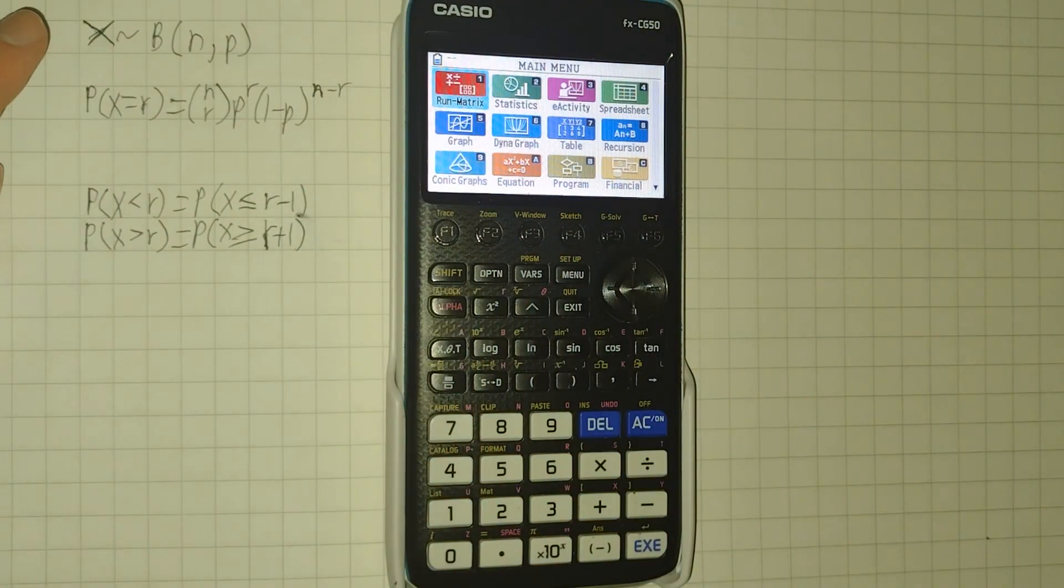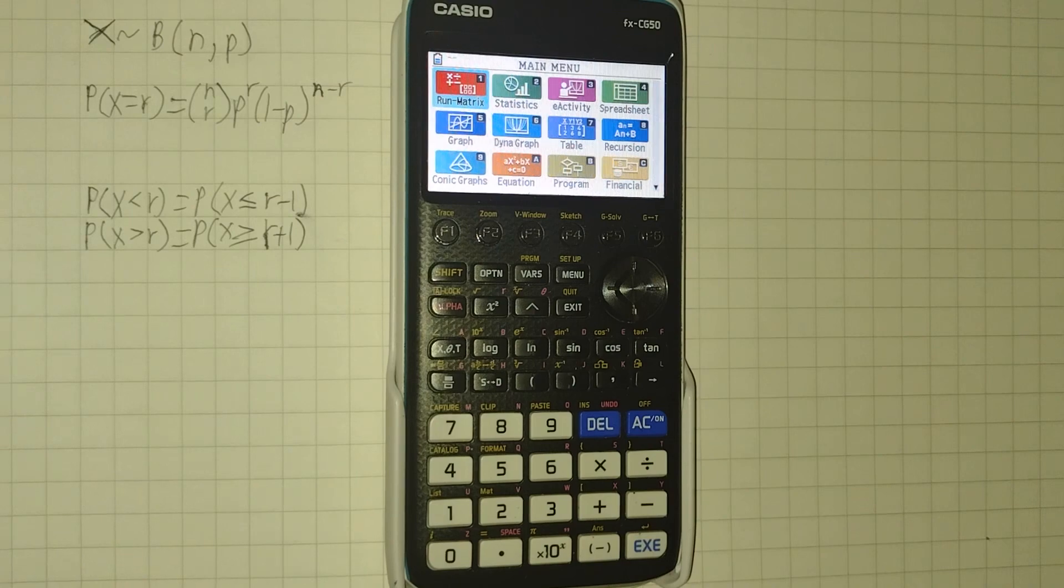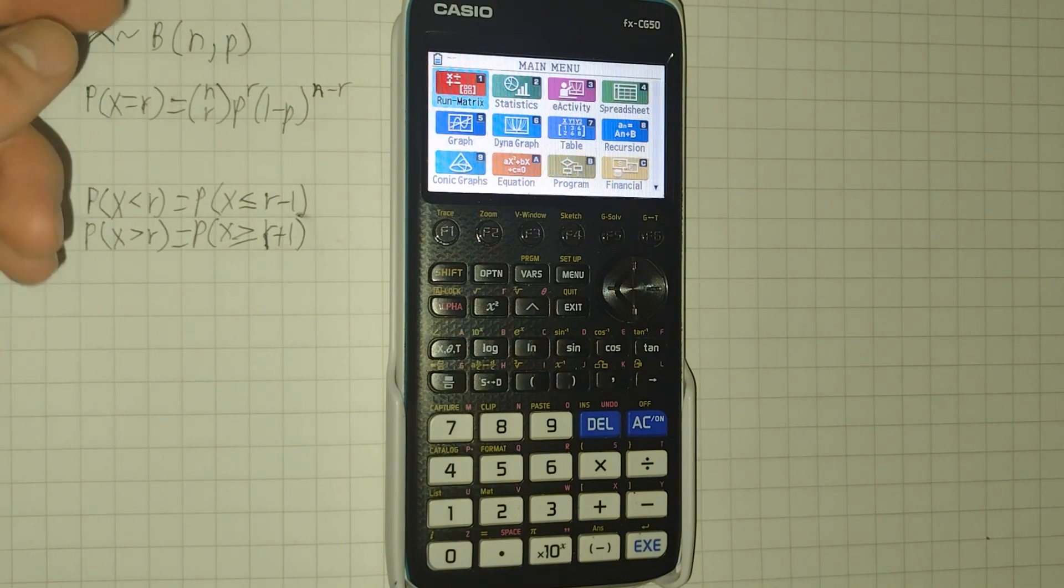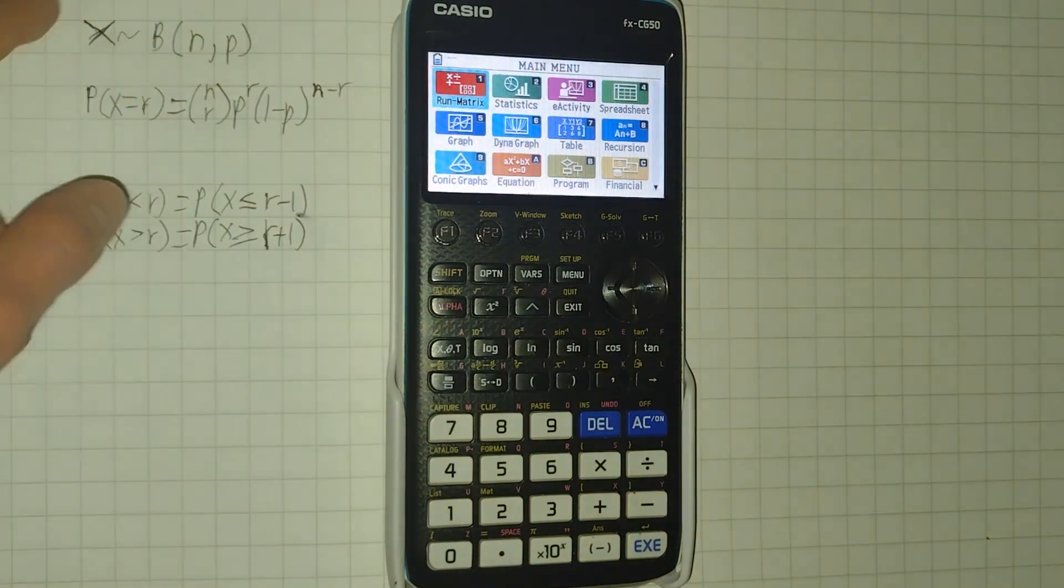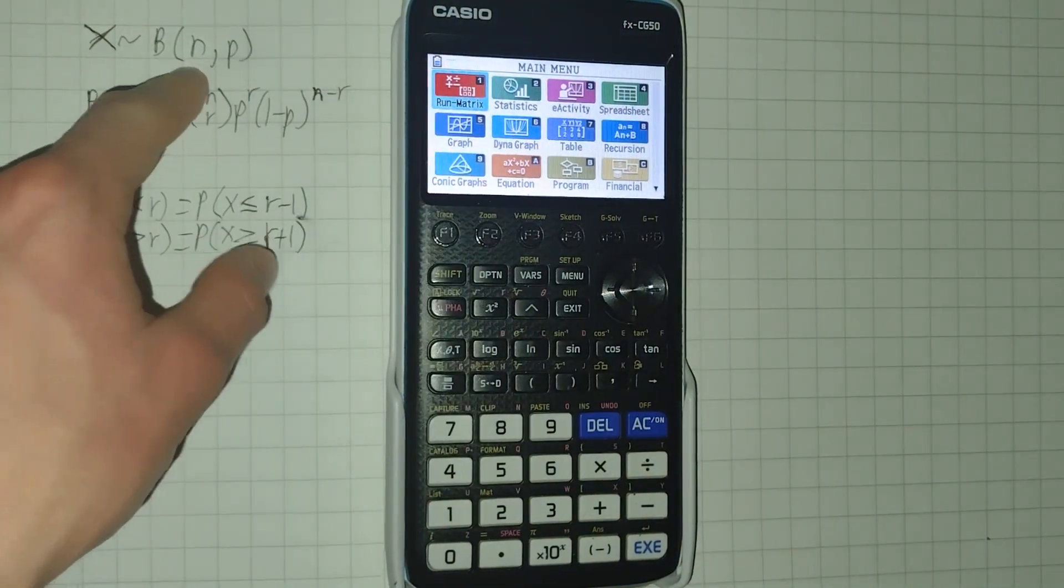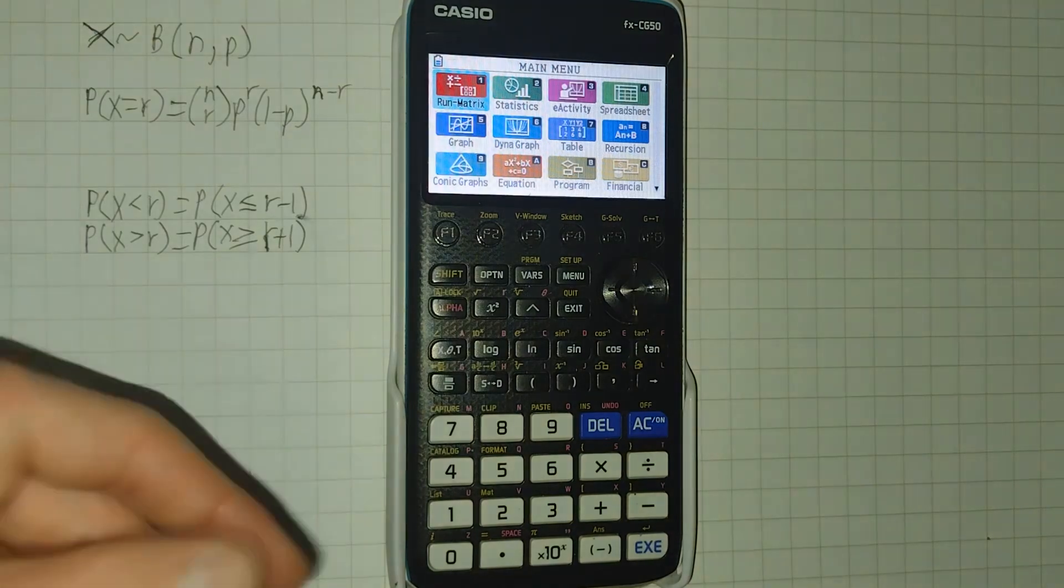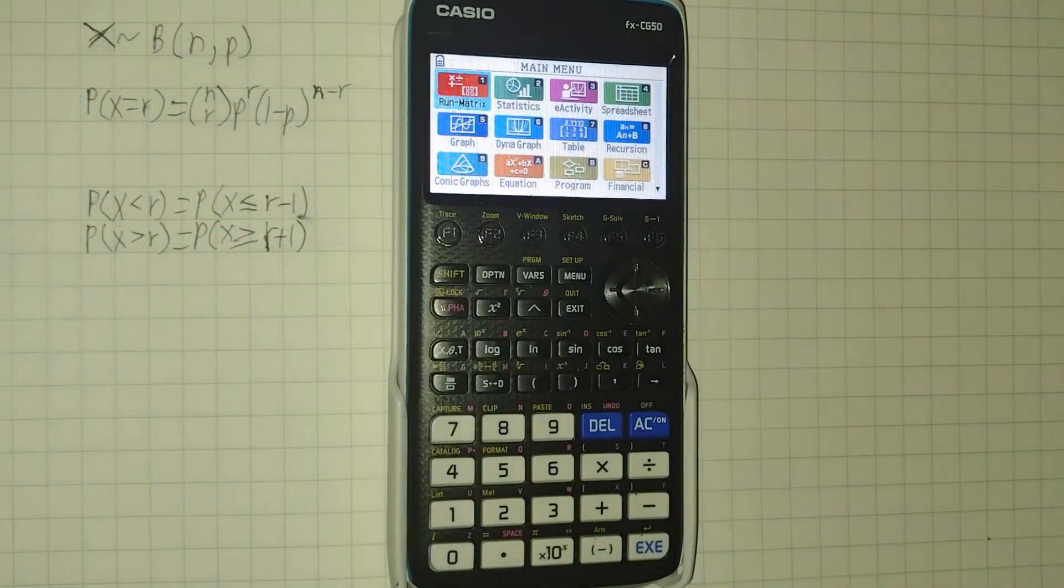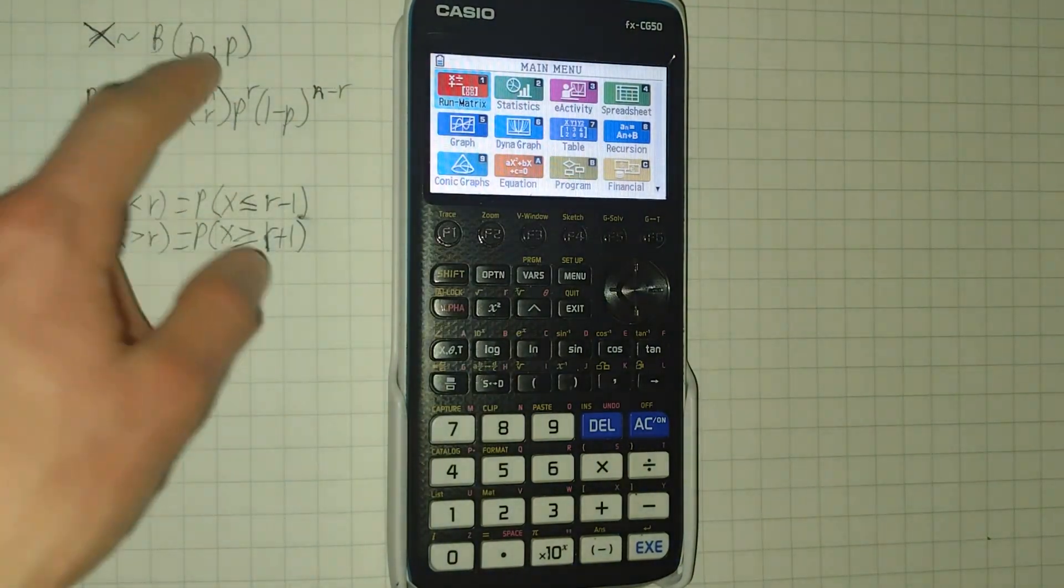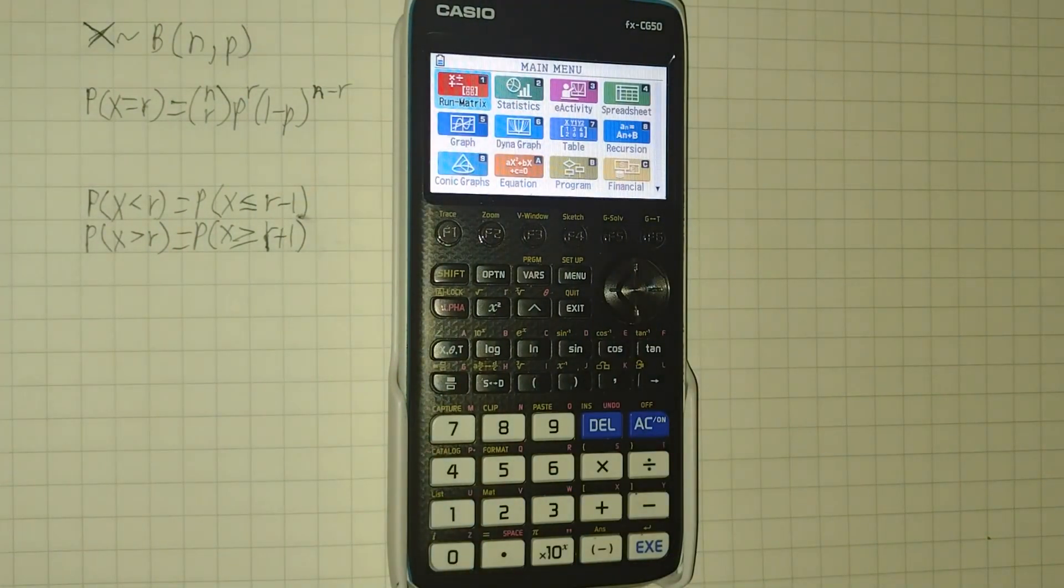So if you've got a random variable X, which represents the number of times some event occurs, for example if I'm flipping a coin some number of times, it could be the number of times the coin has heads. If I've got a random variable X and it's modelled by B(N,P), where N is the number of times it could occur, and P is the probability of it occurring. So returning to my flipping a coin example, if I flip the coin 12 times, N is 12 because it could be heads 12 times, and P is going to be 0.5 or a half, because it is heads half of the time.